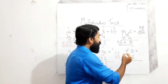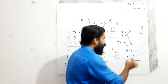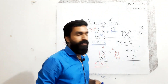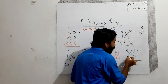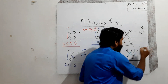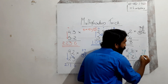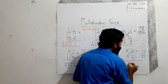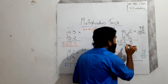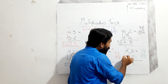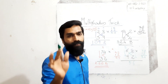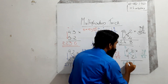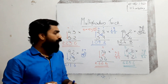Last product: 68 into 92. Unit places: 8 into 2 is equal to 16 — write 6, carry 1. Cross multiplication: 9 into 8 is 72, and 6 into 2 is 12. Add: 72 plus 12 is 84. 84 plus carry 1 is 85 — write 5, carry 8. Tens place: 9 into 6 is 54. 54 plus carry 8 is 62. Write 62. So the answer is 6256.